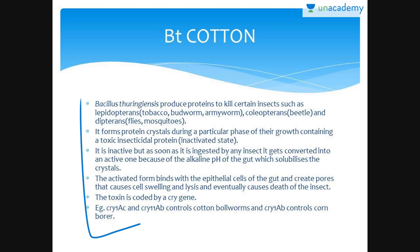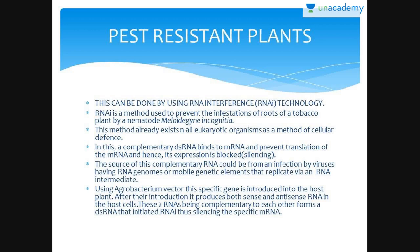Crystal proteins are produced by a gene called cry in BT. The protein coded by genes cry1Ac and cry2Ab controls the cotton bollworms. The protein coded by gene cry1Ab controls the corn borer.